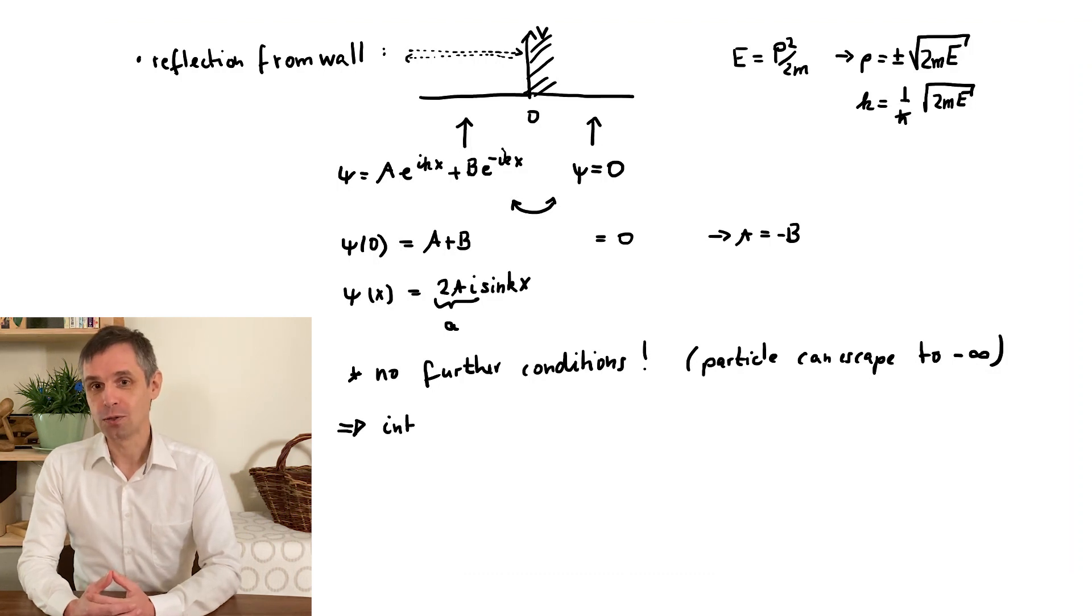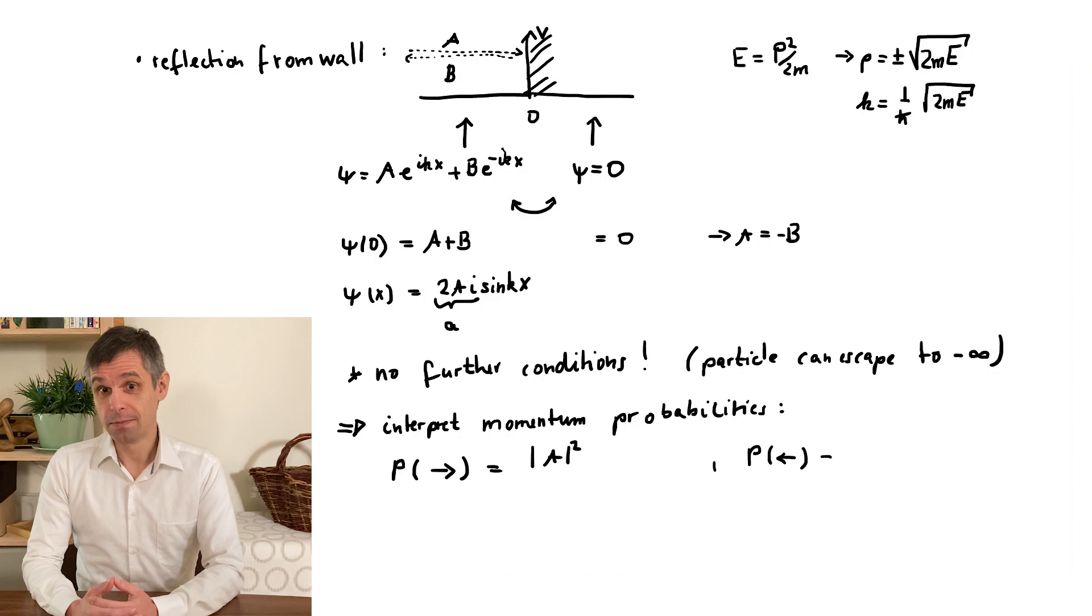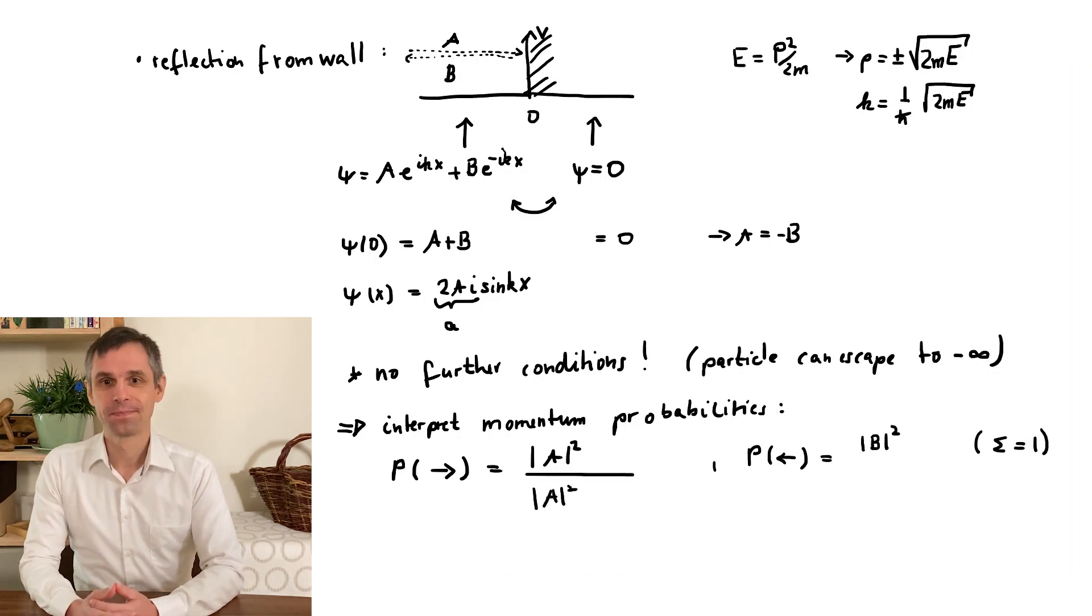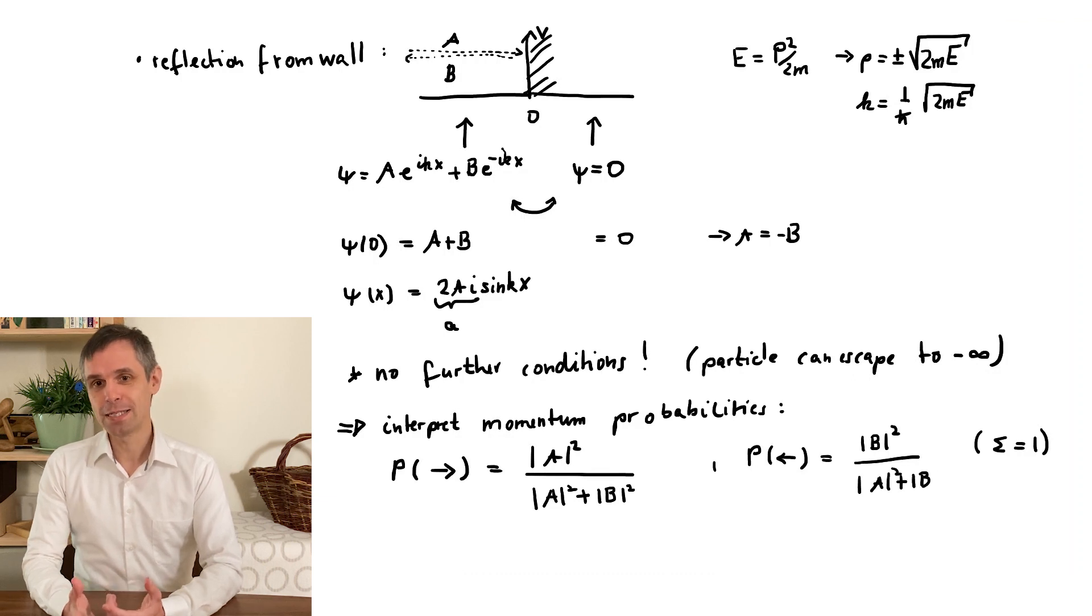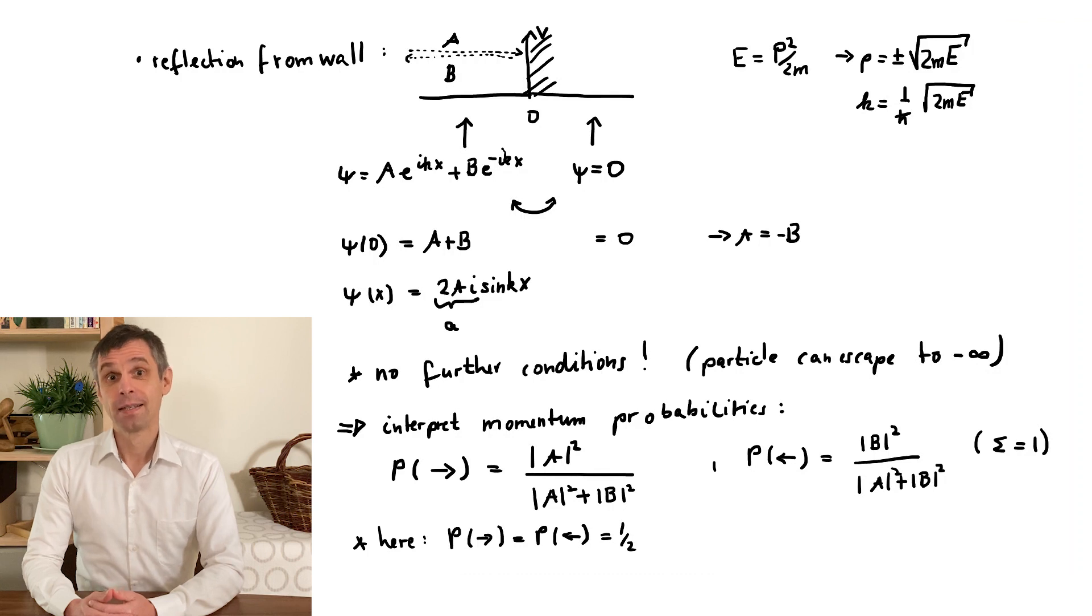So all we would like to know are the probabilities to find the particle to move to the right or to the left. And this is simply determined by the relative intensities of the two components. And we can even write this in a form that is always normalized. In our case, both intensities are equal, so the probabilities are both one half.